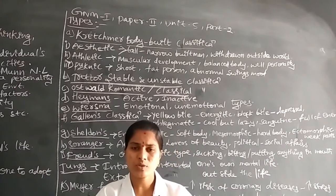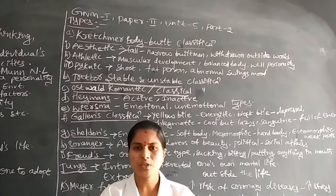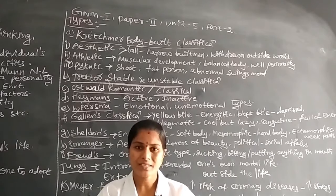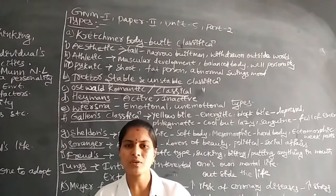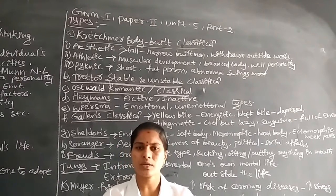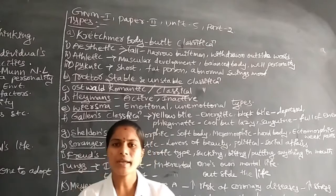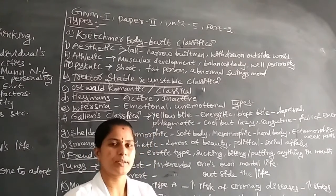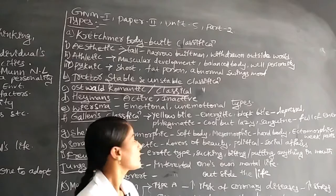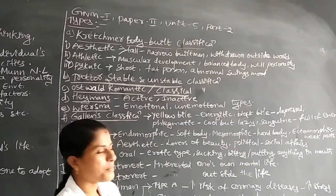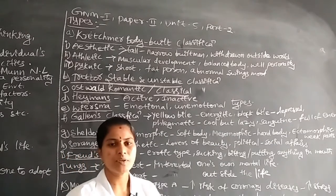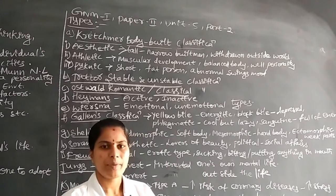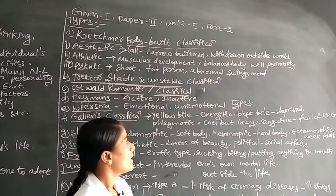While normal individuals maintain their body structure, those having pyknic personality do not develop their body structure properly — the height of the body is very short. These persons also tend to be fat.